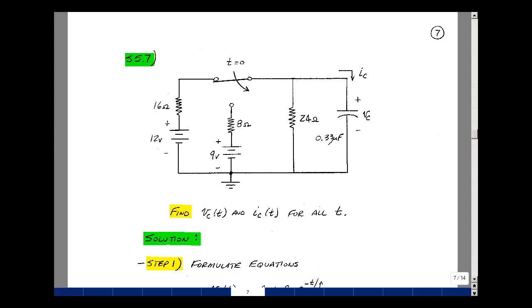This lesson deals with supplemental problem 5.7. You can find this problem in the course ebook in the chapter 5 supplemental problems starting on page 7. Given this one capacitor circuit with a switch that switches from this position to this position at time t equals zero, can you find the voltage across and the current through this capacitor versus time?